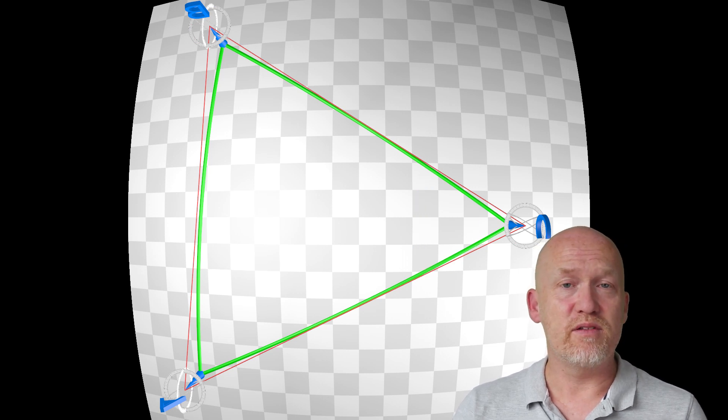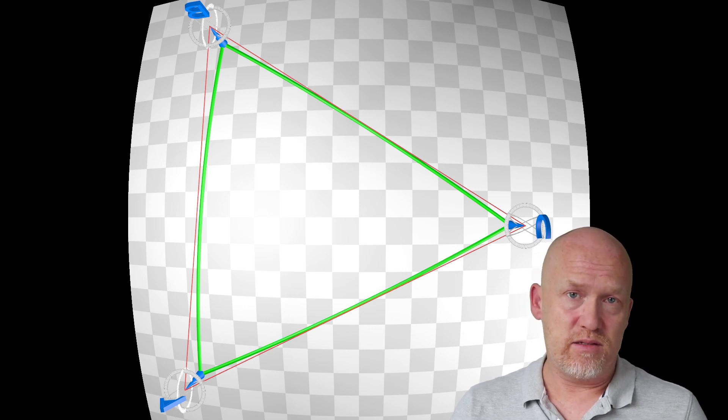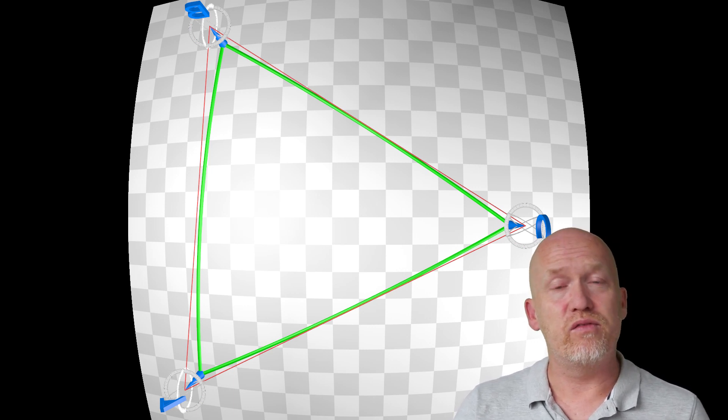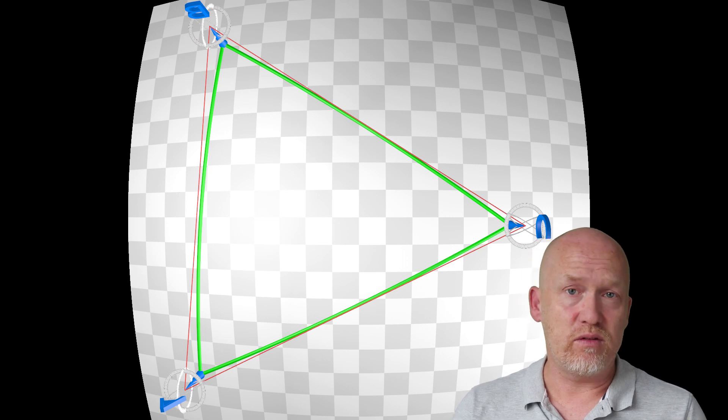And even more important, the spherical triangle matches the distance between the observers, while the flat triangle gives a faulty result.